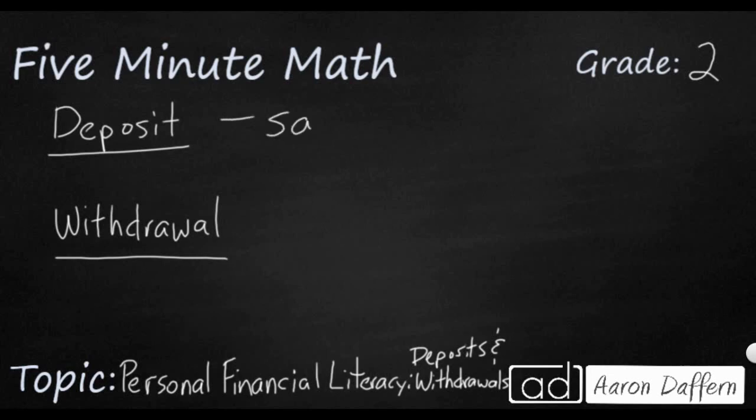We know about saving money. So when you get money from an allowance, from a birthday, maybe you mow someone's lawn, or you have some Christmas money — if you don't spend it immediately, that means you are wanting to save it. You're wanting to save it for maybe a larger purchase later, or you don't know what you want to buy, so you just want to save it so you're not wasting it.